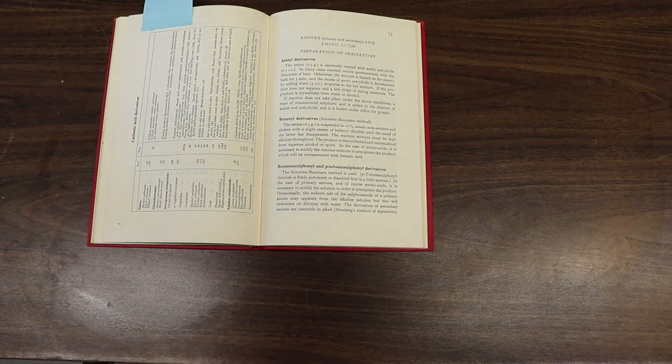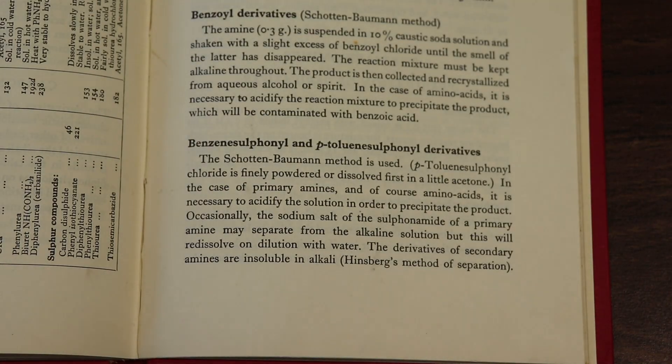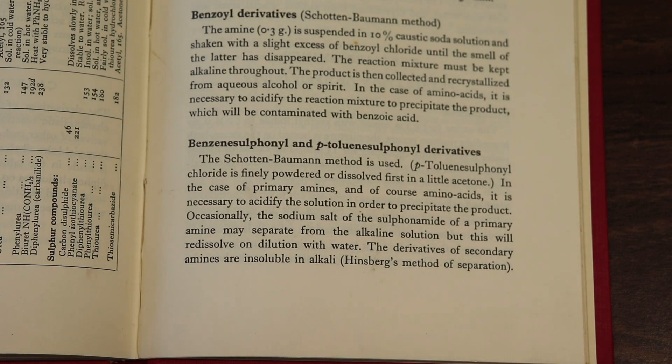This necessitated another way to get evidence for the identification of our product as morpholine. I thought the easiest way would be to make a derivative of morpholine and then measure the melting point of that. For the preparation of the derivative, I employed a modified Hinsberg test.